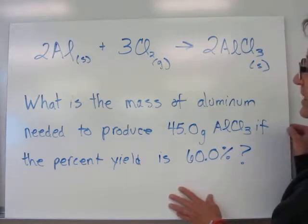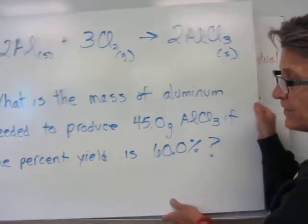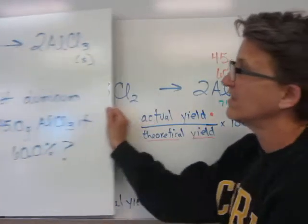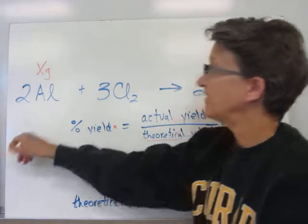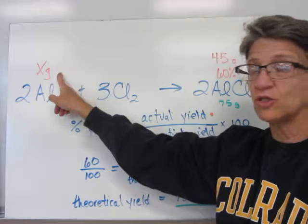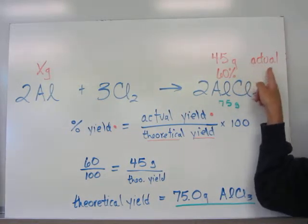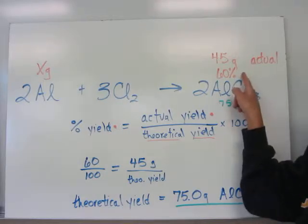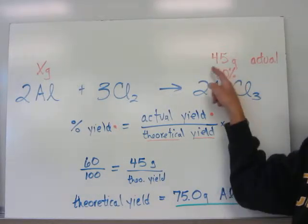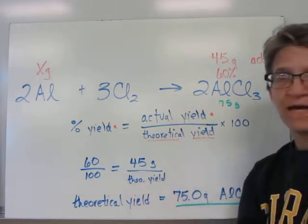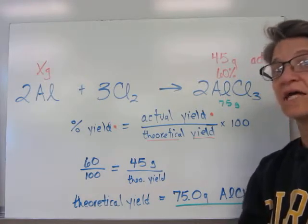The first thing I do is look at the balanced equation and write everything I know above it. I know I want to find how much aluminum is needed. I know I need 45 grams of the aluminum chloride, and it's a 60% yield. This is the actual amount that I need. That's the actual yield.